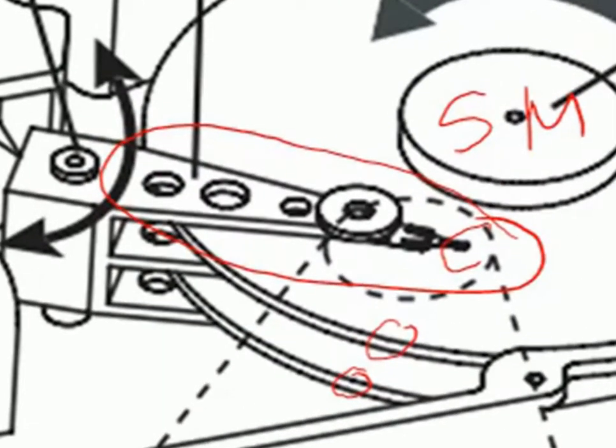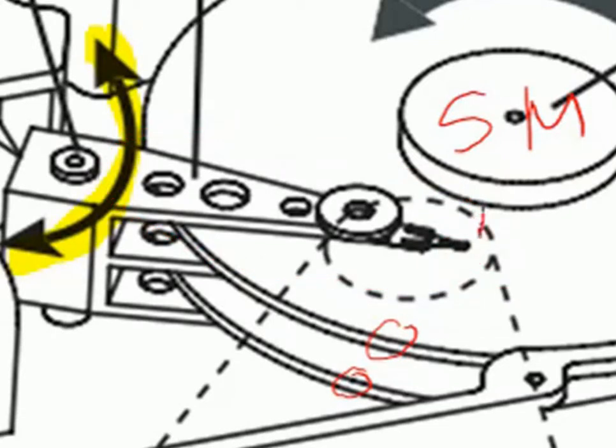The E-block rotates around the pivot. We can see here that as the E-block rotates around its pivot, the head can reach radially any position from the inner diameter to the outer diameter.